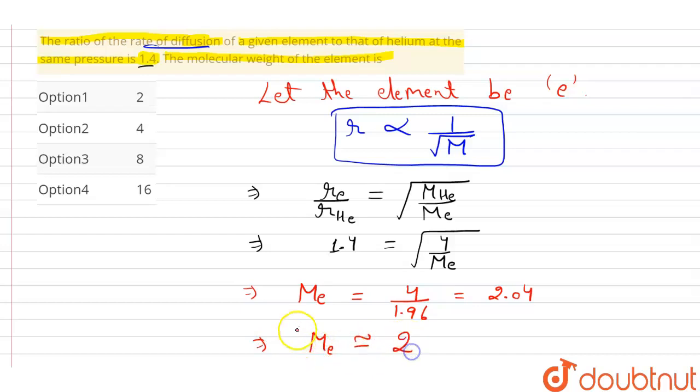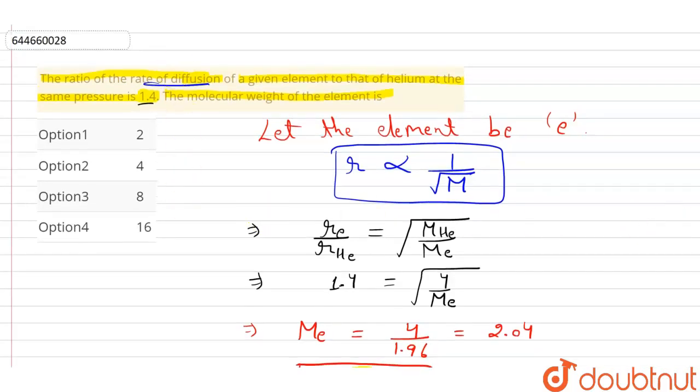So approximately the molecular weight of element e is equals to 2. So it is our answer, the molecular weight of element is 2, so you can mark the option now. So option first is our answer, rest of the options are wrong. Option first is the answer, that is 2. Thank you.